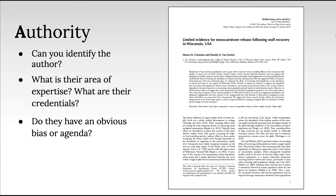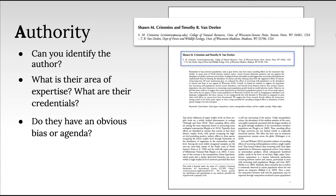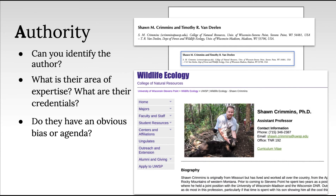Fourth, with what authority does the author write? Can you identify the author? What is their area of expertise? What are their credentials? Do they have an obvious bias or agenda? If the author's authority isn't immediately apparent, then you might want to search online to find a website or faculty page associated with the author to learn about their credentials and expertise.